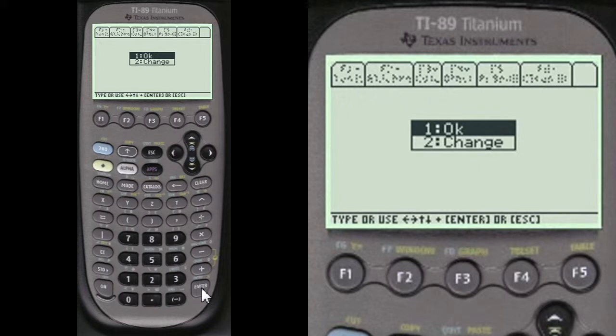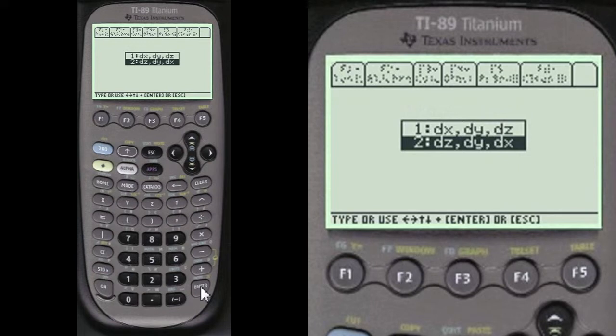I always ask if you so k so that you can change it in case you made a mistake. And we're going to want to do number one dx dy dz.